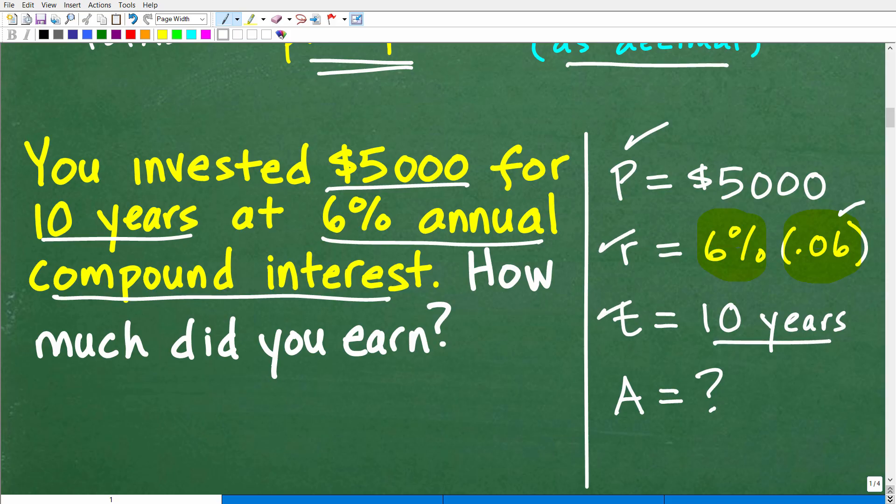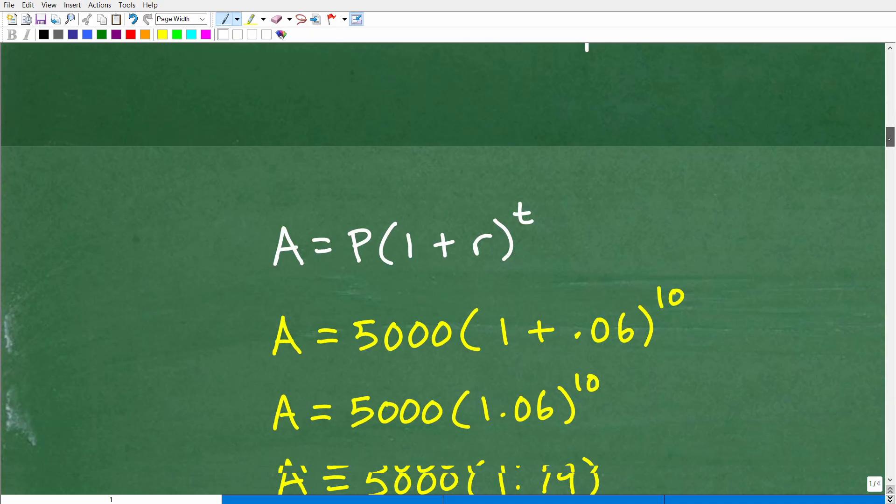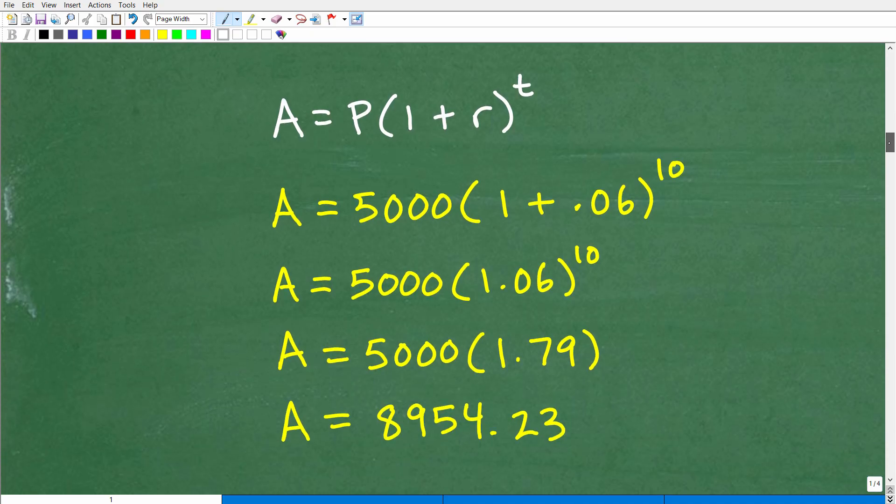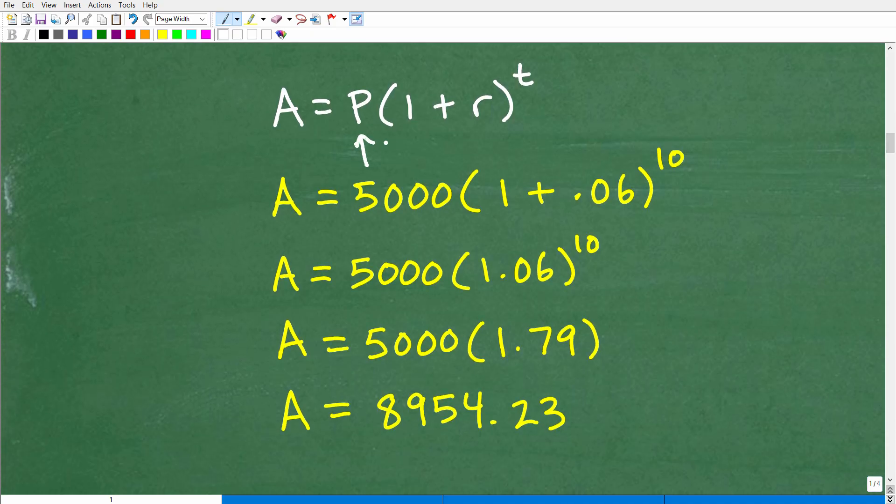What we're looking to answer is how much did this investment grow? So that'll be our total amount, A. Let's just go ahead and plug this stuff in to the formula and we'll get the right answer. P is going to be 5,000. That's going to be our principal amount. So 1 plus R, R is our growth rate, our compound interest rate as a decimal. So 6% as a decimal is 0.06 and T is 10 years.